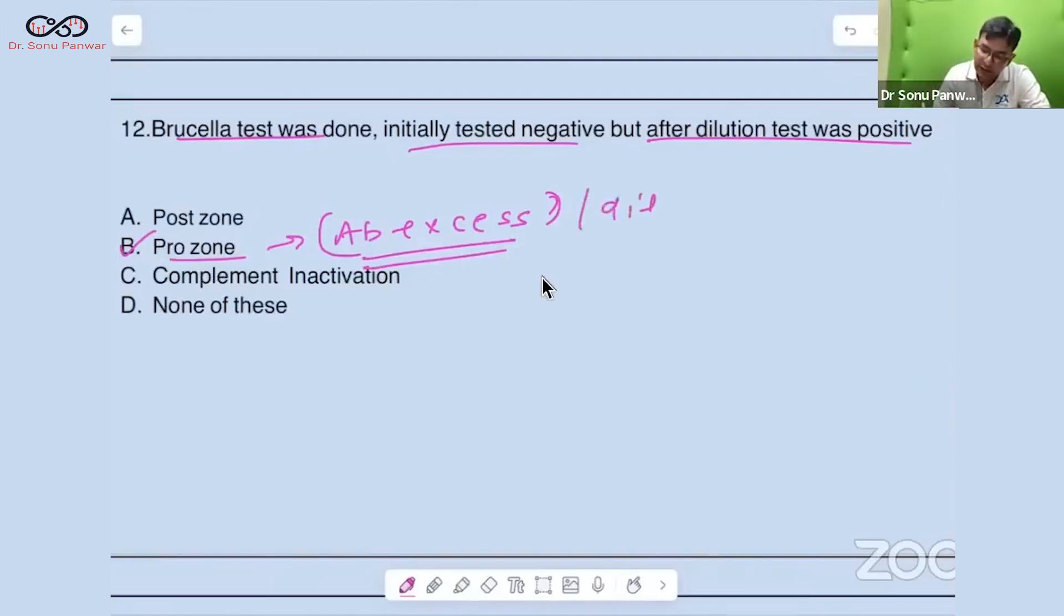You have to bring them after dilution into the zone of equivalence. When you do the dilution, they come in the zone of equivalence. That's why it's telling after dilution the test comes out to be positive.